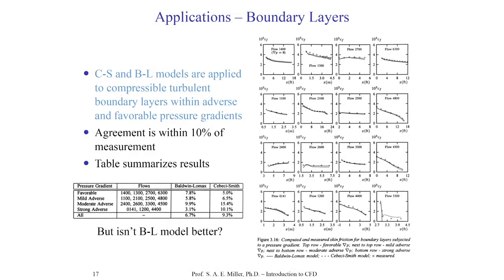Both the Cebeci-Smith model (dashed line) and Baldwin-Lomax model (solid line) are shown against experimental data. You can see how adverse pressure gradients change the skin friction on the wall as boundary layer distance increases downstream — skin friction is plotted on the wall as you move downstream. Both are good for what they're designed for: you have to use the right tool for the right job, just like choosing the right turbulence model for the right flow.